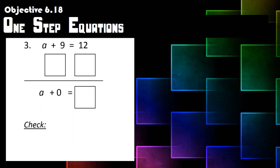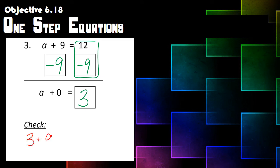Last example: A plus nine equals twelve. The opposite of addition is subtraction, so we take away nine from both sides. A equals twelve minus nine, which gives us three. Let's check: fill in three for A — three plus nine equals twelve. With mental math, we know this checks out. We are in great shape!